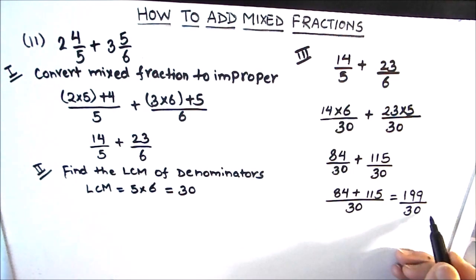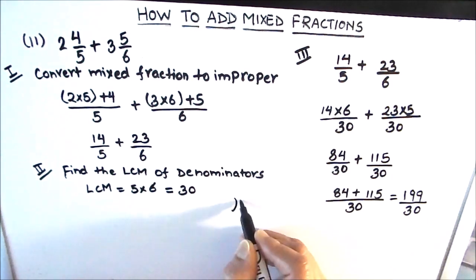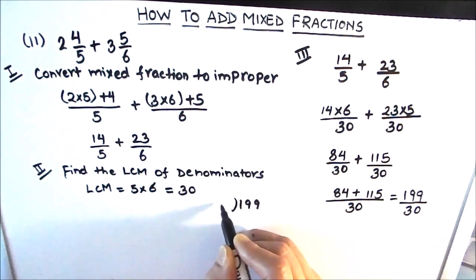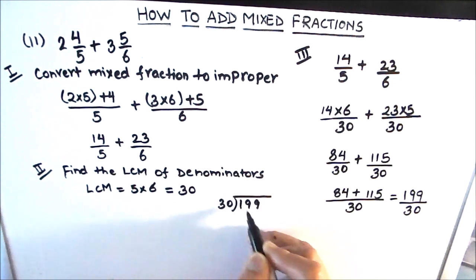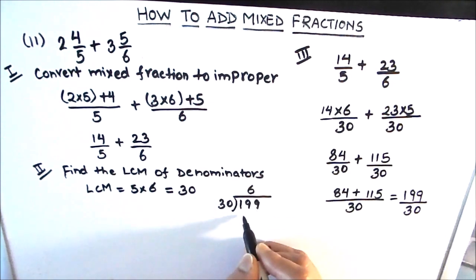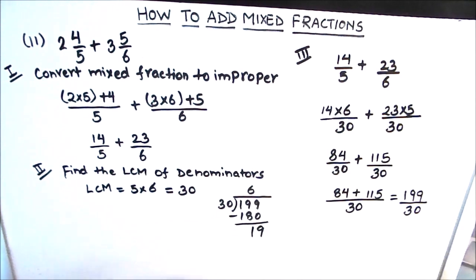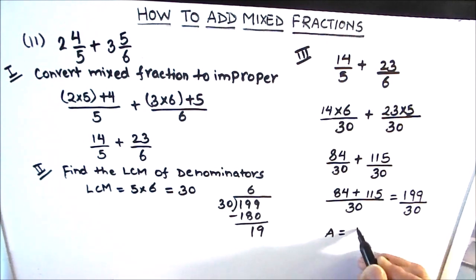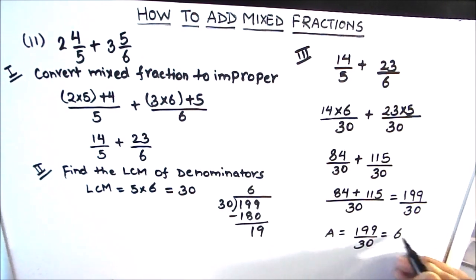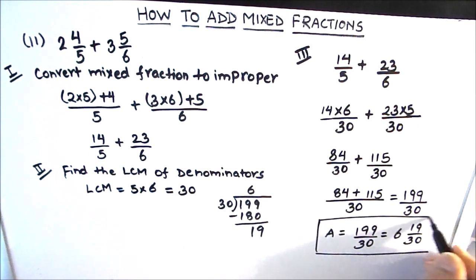Let's convert 199/30 to a mixed fraction by dividing 199 by 30. 30 × 6 = 180, and the remainder is 19. So 199/30 converted to a mixed fraction is 6 19/30. This is going to be our final answer. This is how we add two mixed fractions.